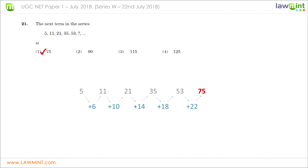Question twenty-one gives a series of numbers and asks which number comes at the end. This is similar to a question in the series P paper from 8th July 2018. Write the numbers next to each other on the rough sheet and find the difference between each consecutive pair: 11 minus 5 is 6, 21 minus 11 is 10, 35 minus 21 is 14, and the next difference is 18. The progression of differences increases by 4 each time: 6, 10, 14, 18. The next difference is 22, so adding 22 to 53 gives 75. Therefore choice one is the correct answer.